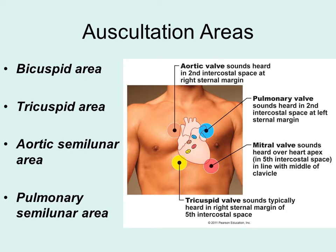You can listen to different locations along the thoracic area of the heart to hear the different valve sounds. As depicted here, it shows where you can place the stethoscope to hear the aortic valve versus the pulmonary valve, and then the tricuspid and the mitral valve.